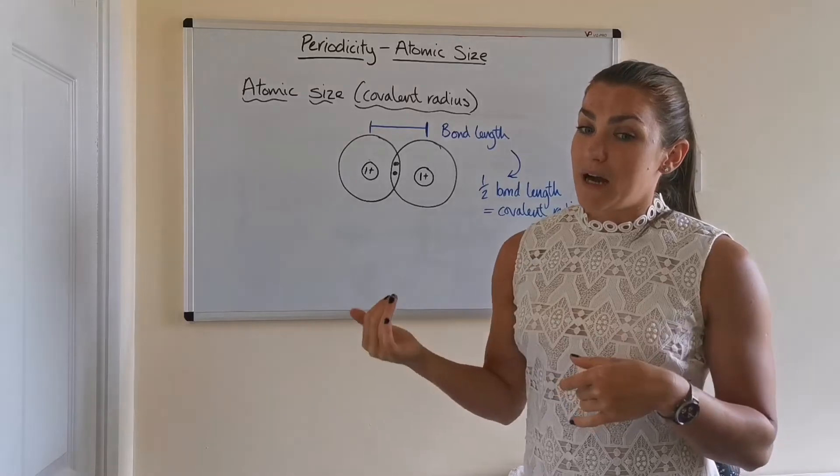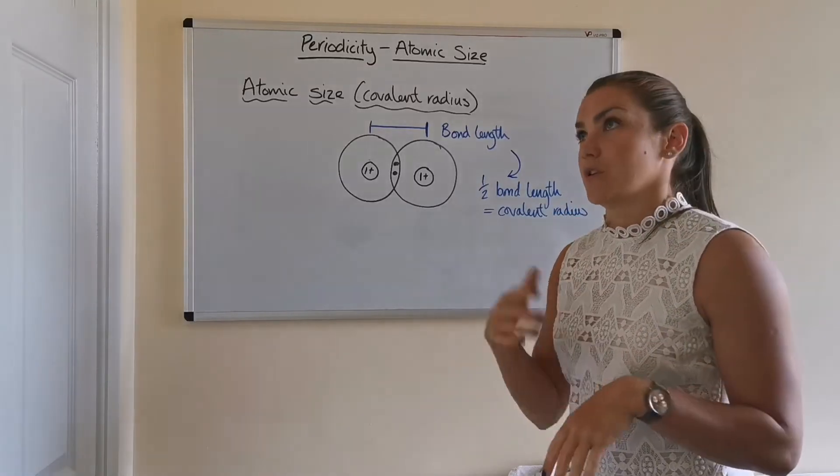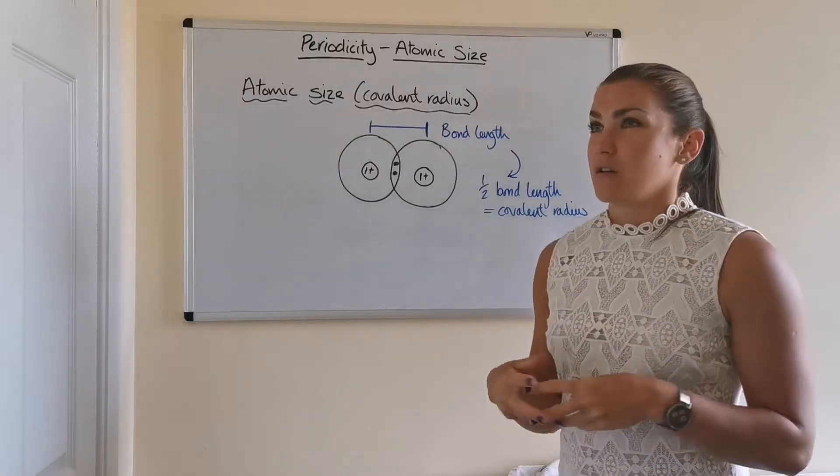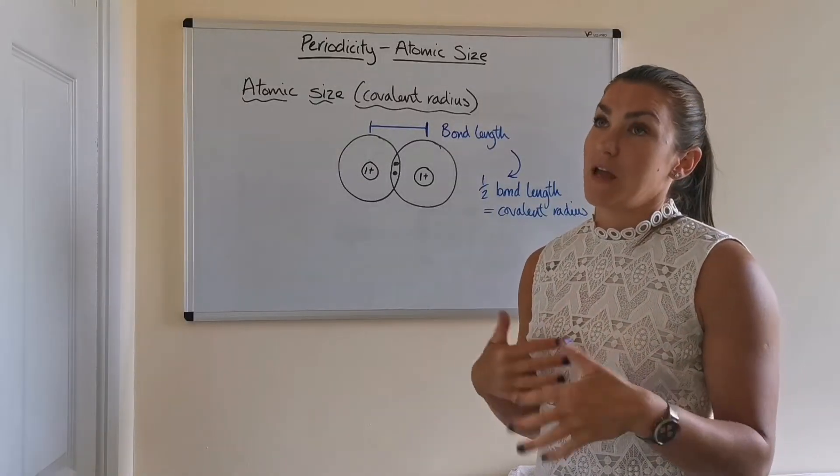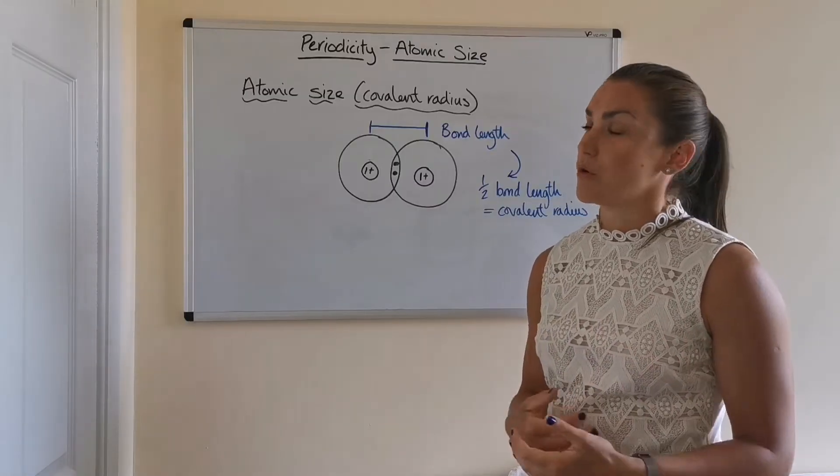So we basically just use the general pattern that we see going across the period or down a group that we're going to discuss in a minute to guesstimate or make an educated guess at whether the atom would be big or small.